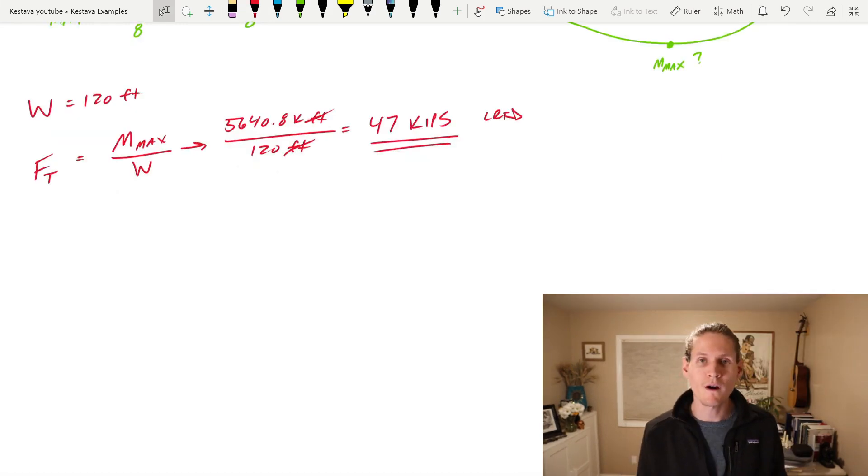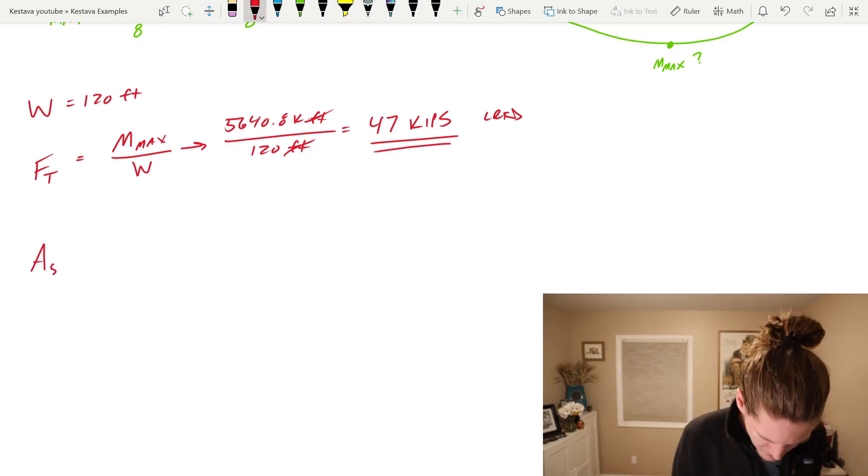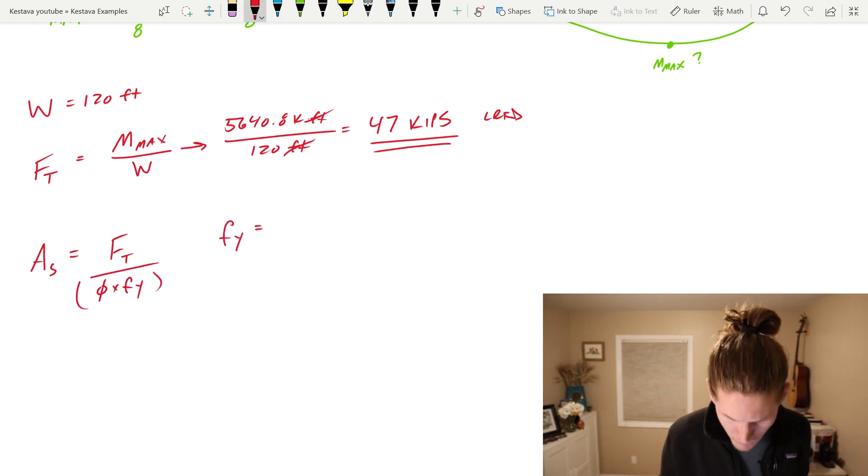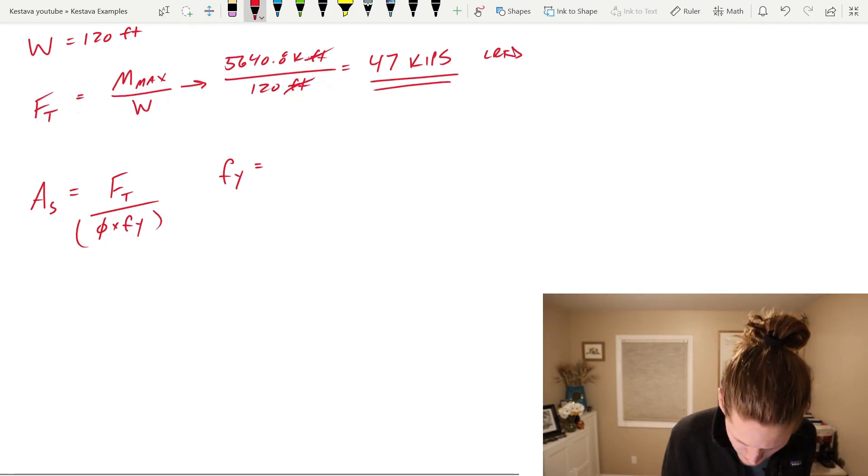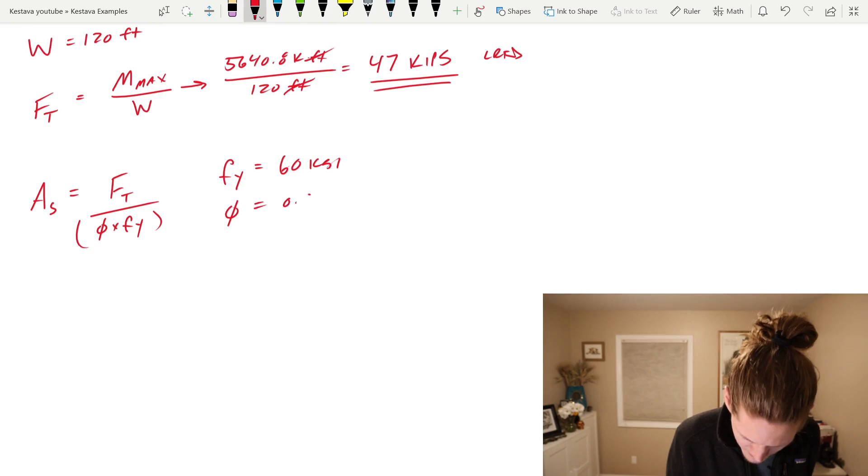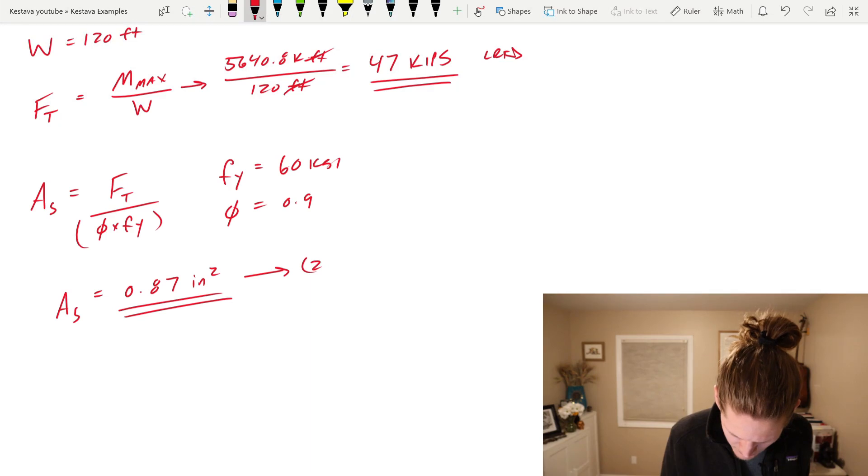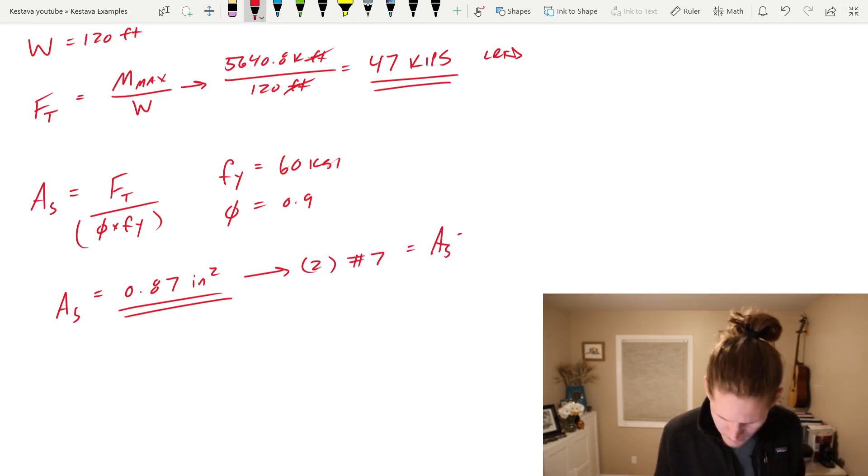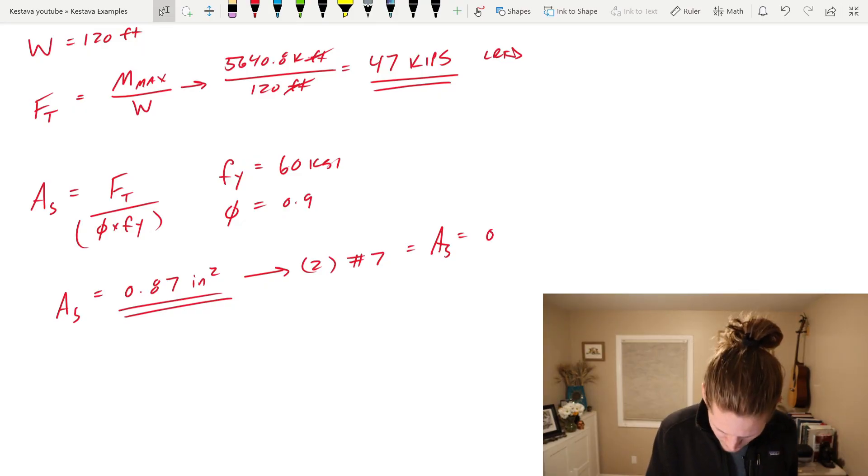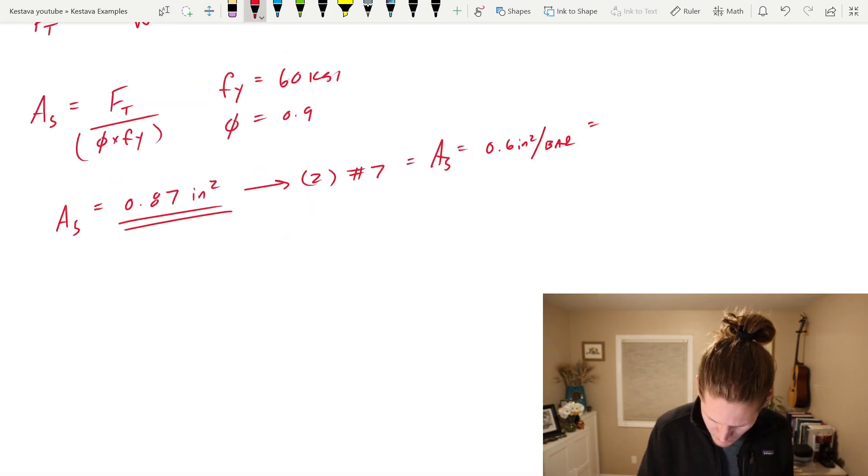Now we need to determine what amount of rebar we need in order to resist that chord force. Area steel can be equal to FT over phi Fy. Our yield strength of our reinforcing is 60 ksi. And phi for tensile application is equal to 0.9. That gets us AS equal to 0.87 square inches of required rebar. And that we can use two number sevens, which equate to an area of steel equal to 0.6 inches squared per bar, which gets us 1.2 inches squared, which is greater than our AS required.